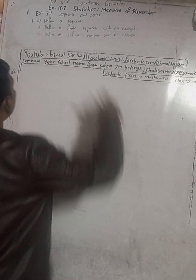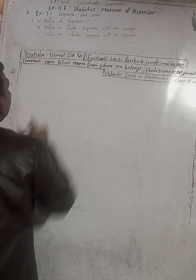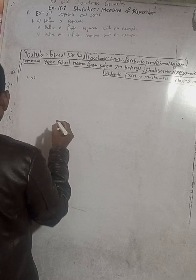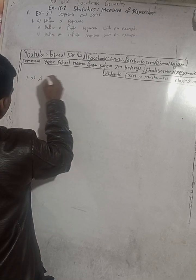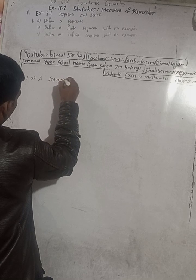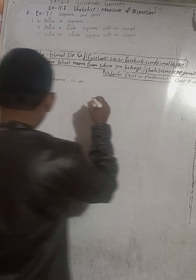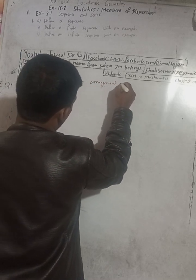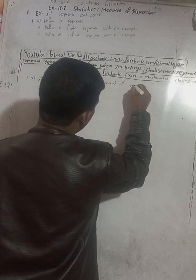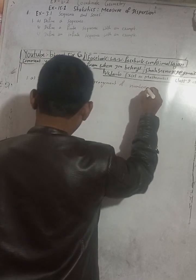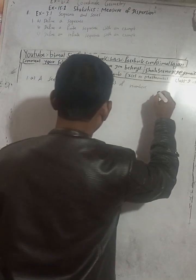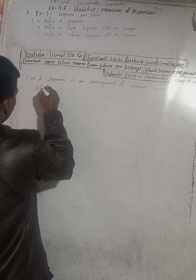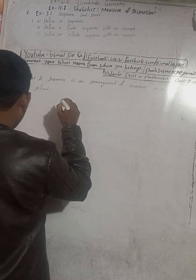Now the question is here — Question 1a: Define a sequence. What is a sequence? So a sequence is an arrangement of numbers.